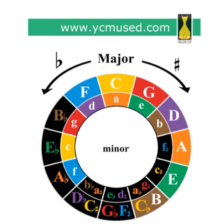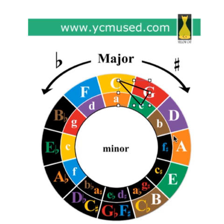Root position triads can be shown quite easily with this major minor circle of fifths configuration. The major third is the clockwise diagonal, C to E. The fifth is from C to G, so your major root position triad would be C, E, and G for C major. For G major, the G major root position triad is G, B, and D.